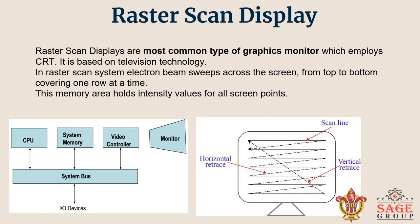The illuminated spot will turn on where the E points are, and turn off elsewhere. The picture definition is stored in a memory area called refresh buffer or frame buffer.